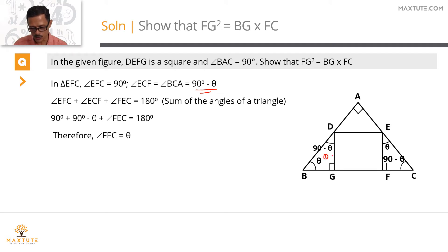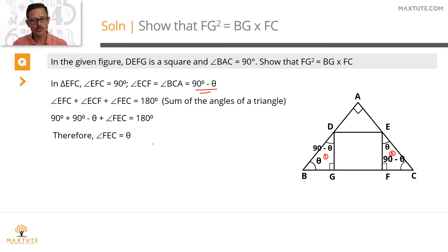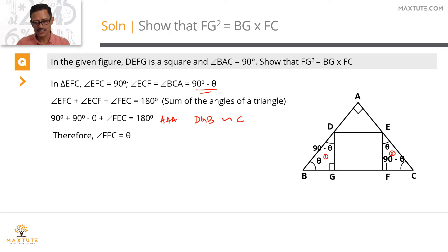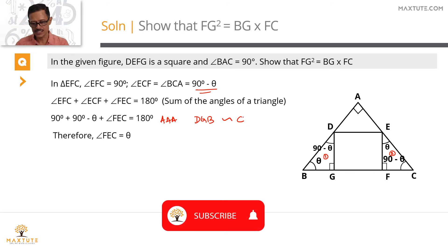Comparing triangle 1 (DGB) and triangle 2 (EFC), all three angles are equal. By AAA similarity, these two triangles are similar. Specifically, triangle DGB is similar to triangle CFE — matching D (90 − θ) with C, G (90°) with F, and B (θ) with E.